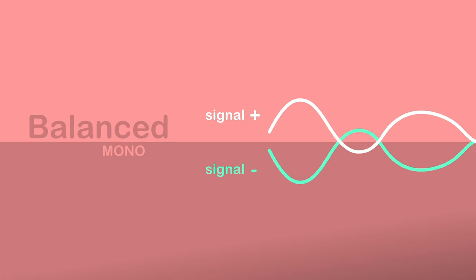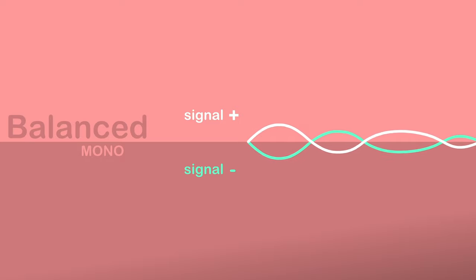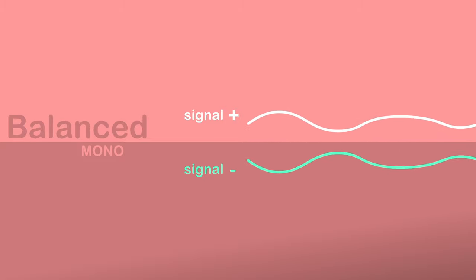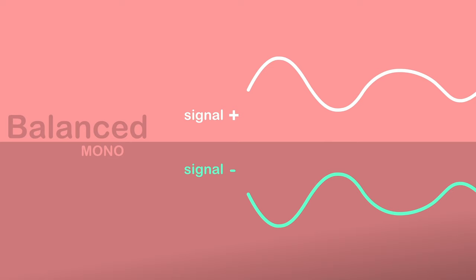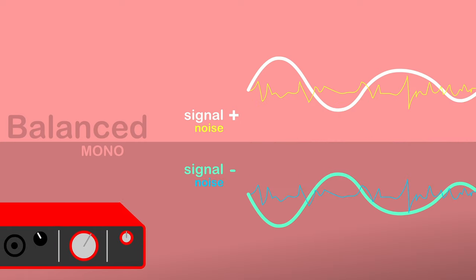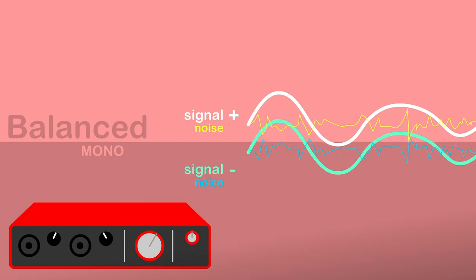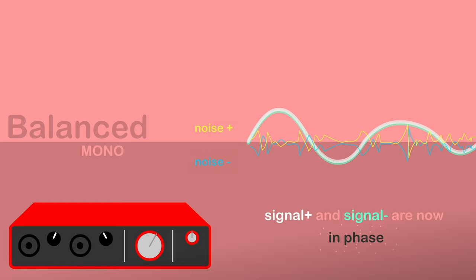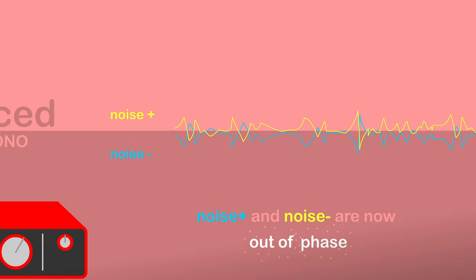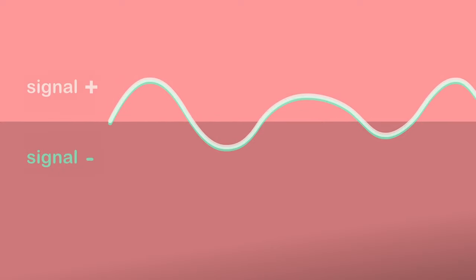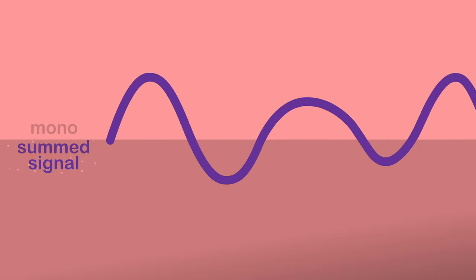If these two signals are summed or added together, they will cancel each other out because they are identical but with inverse polarity. Balanced connections use this concept to eliminate noise in a simple but ingenious way. If, while traveling through the cable, the two signals pick up noise, that noise would be identical in both signals. At the end of the cable, the receiving gear flips the second signal before summing the two together. When the polarity of the second signal is flipped back, the original signals are now back in phase, but the noise picked up by the second signal becomes inverted with respect to the noise on the first signal. When the two signals are summed, the noise in the first signal is cancelled out by the inverted noise in the second one, but the two original signals, now in phase, combine into a much stronger mono signal.